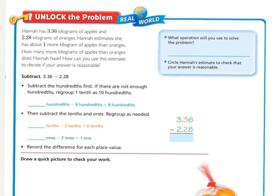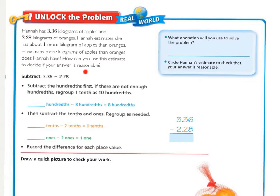Unlock the Problem. Hannah has 3 and 36 hundredths kilograms of apples and 2 and 28 hundredths kilograms of oranges. Hannah estimates she has about 1 more kilogram of apples than oranges. How many more kilograms of apples than oranges does Hannah have? How can you use this estimate to decide if your answer is reasonable?